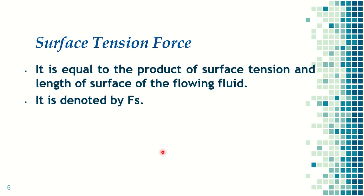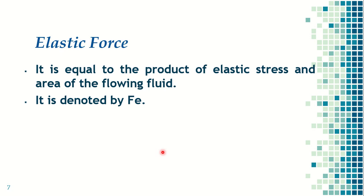Next comes surface tension force. Surface tension is the tensile force acting per unit length. Surface tension comes into action when two immiscible liquids are in contact with each other, or when one liquid is in contact with air. Surface tension force is the product of surface tension (Sigma) and length, and is denoted by the symbol Fs.